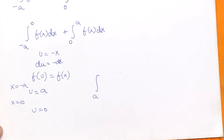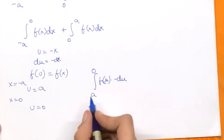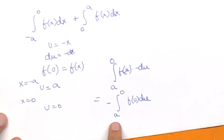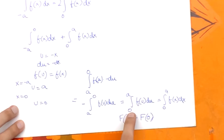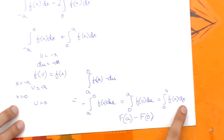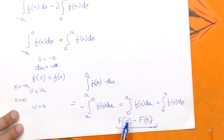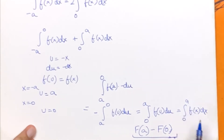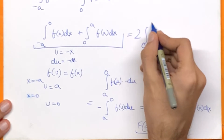Substituting gives us the integral from a to 0 of f(u) times (-du). Taking the minus outside: -1 times the integral from a to 0 of f(u) du. Because of the minus sign, we can interchange the limits and remove the minus sign, using the property of integration. This integral is exactly the same as the integral from 0 to a of f(x) dx — it doesn't matter which variable we use in definite integration, since the result is evaluated using the anti-derivative F. So we've proved the integral from minus a to 0 of f(x) dx equals the integral from 0 to a of f(x) dx, giving us 2 times the integral from 0 to a of f(x) dx.